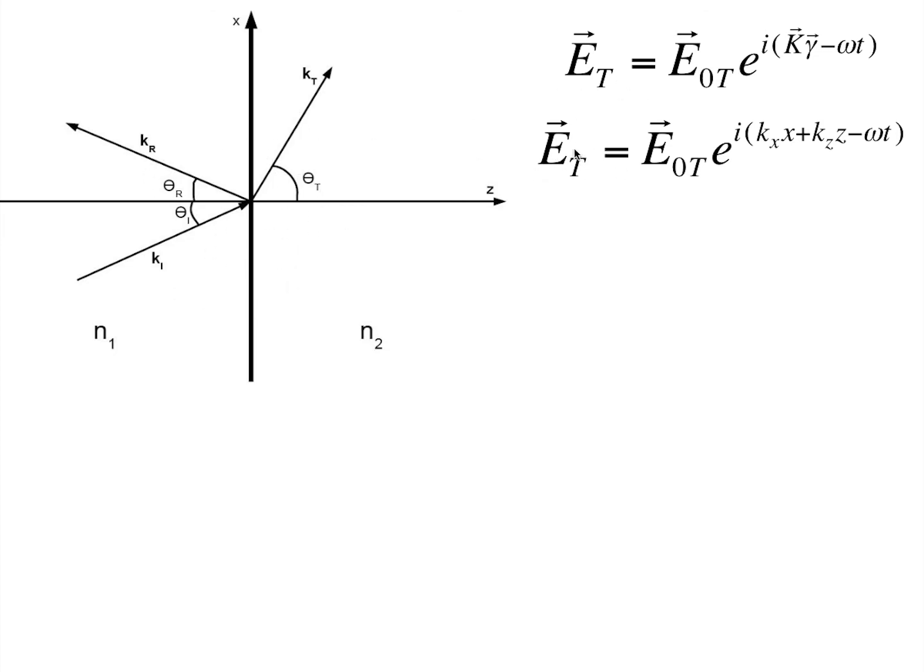So, we get the relation Et vector equals E naught t vector times e raised to i, kx times x vector plus kz times z vector minus omega t.